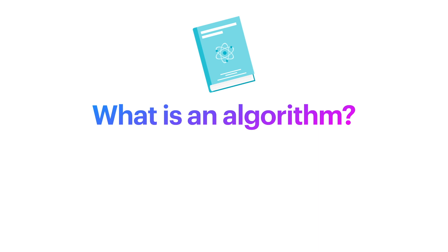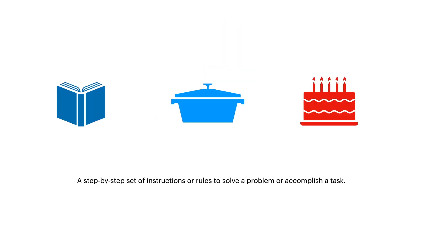What is an algorithm? An algorithm is a step-by-step set of instructions or rules to solve a problem or accomplish a task.